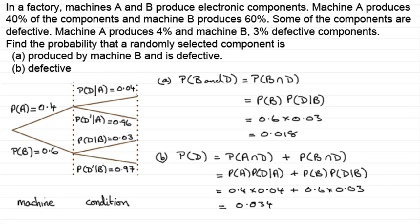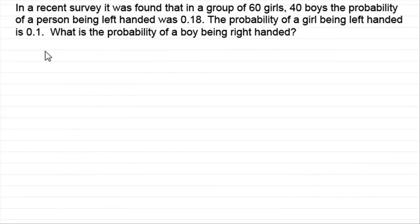The next question is a lot harder — I'd strongly encourage you to have a go at this. In a recent survey, in a group of 60 girls and 40 boys, the probability of a person being left-handed was 0.18, and the probability of a girl being left-handed is 0.1. What is the probability of a boy being right-handed? Pause the video and have a go.